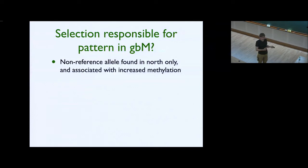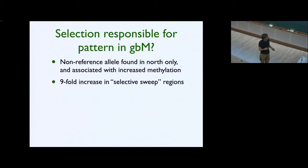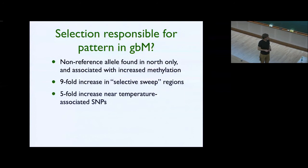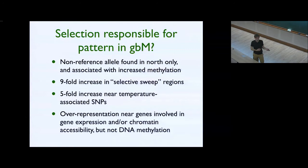Could selection be responsible for this? There's a strong geographic pattern: non-reference alleles — and the reference genome is a more southern accession, so these are really just SNPs associated with being in the north — are found in the north only and are associated with increased methylation. They're highly enriched in regions that look like they've undergone some kind of selective sweep. They're highly enriched near SNPs that in global surveys are associated with temperature. And there is an over-representation of certain gene ontology categories — all suggesting something weird is going on, but I'm just completely speculating here.